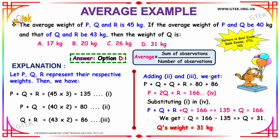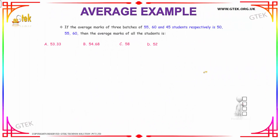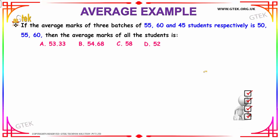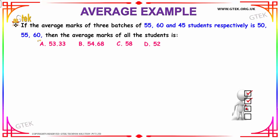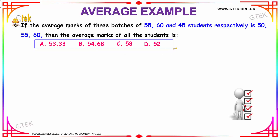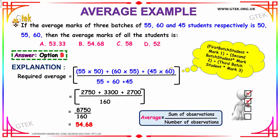Moving on to our next question: the average marks of three batches of 55, 60, and 45 students respectively are given to be 50, 55, and 60. We need to find the average marks of all the students combined. The options are 53.33, 54.68, 58, and 52.